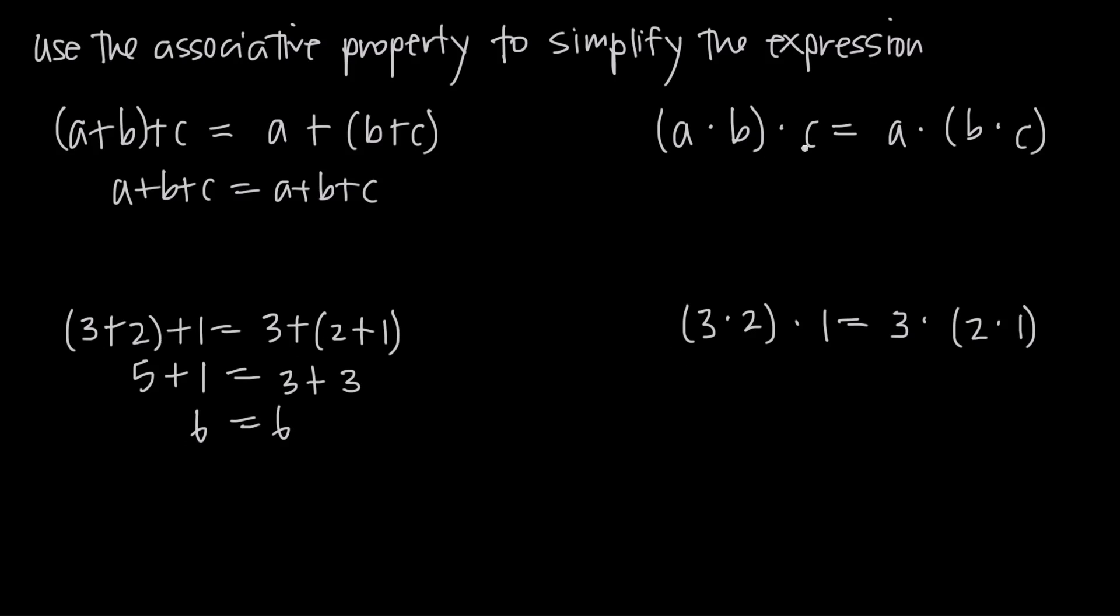Looking at some examples for multiplication, we have a times b times c. Whether we do a times b first and then multiply that result by c, or if we do b times c first and then multiply that result by a, it doesn't matter. We're still going to get a times b times c equal to a times b times c. The associative property tells us that the grouping doesn't matter.